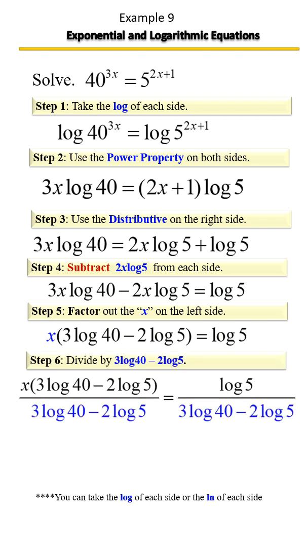And if we get our scientific calculator, the approximate decimal value is 0.205.